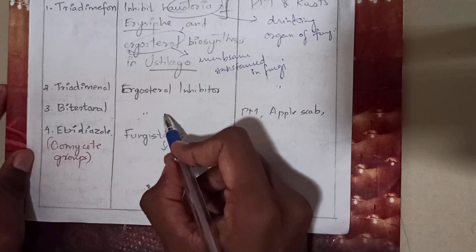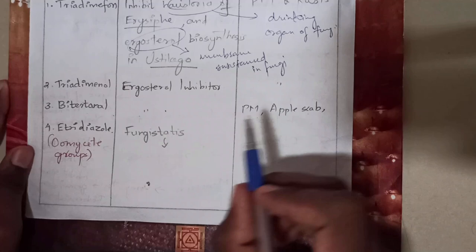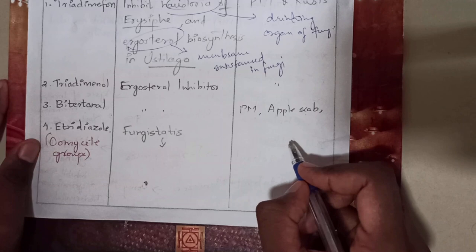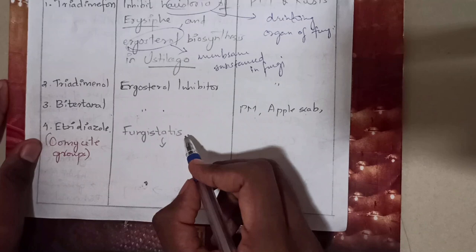The fourth compound is etridiazole, mainly used against oomycetes. It is also used for preventing powdery mildew and rust. The mode of action does not kill the fungi but arrests the action of the fungi.